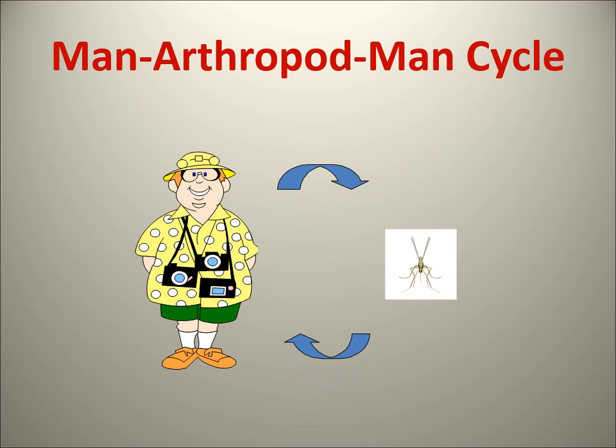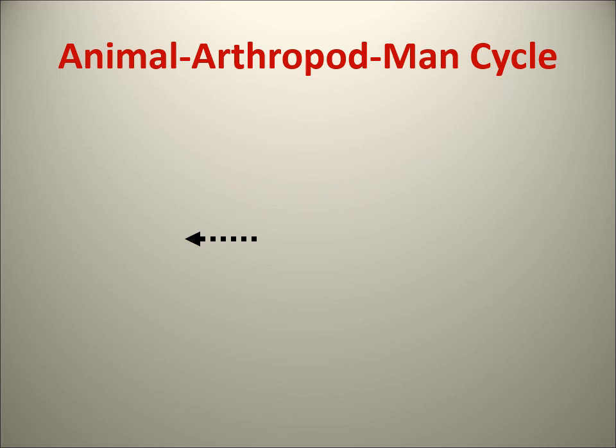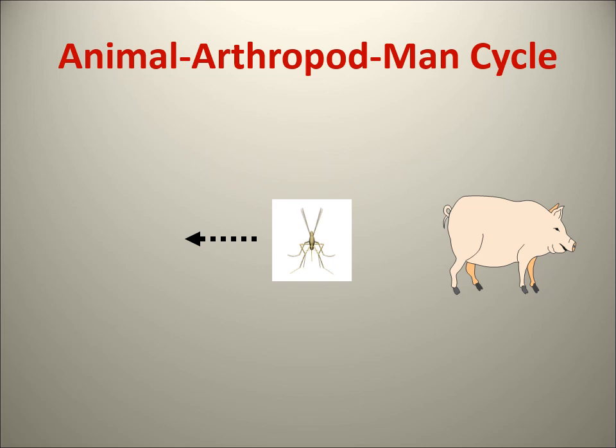The mosquito takes the virus from man, it multiplies within the mosquito vector, and then when the mosquito bites another person it transmits the infection. That is the man-arthropod-man cycle. The other cycle is the animal-arthropod-man cycle, where the cycle mainly goes between animal and arthropod, and humans can accidentally be involved. For example, the mosquito takes virus from a pig, transmits to other pigs, but can also transmit to humans. This animal-arthropod cycle is the more common method of arbovirus transmission.